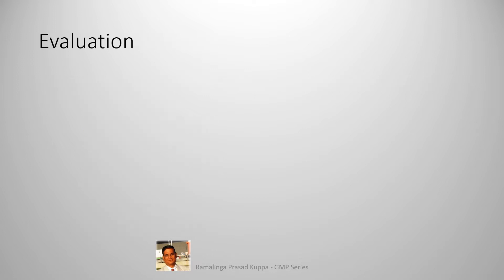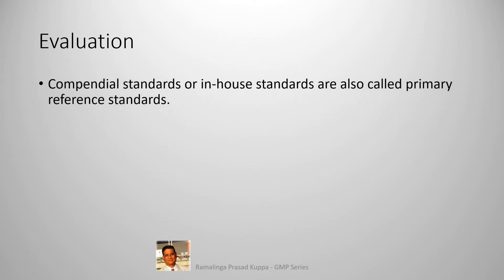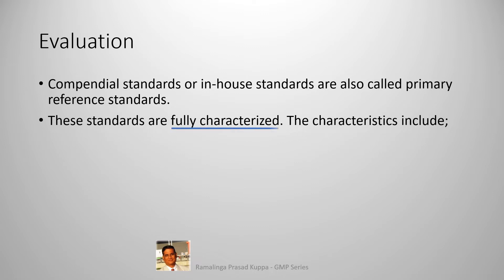Let us see how evaluation is done. Compendial standards or in-house standards are also called primary reference standards. Such primary standards are handled in two phases. First is the characterization or structure elucidation. The following analytical techniques establish the chemical structure and mass of the substance unequivocally. Explicit information on the molecular structure will be established by these tests. These standards are fully characterized.